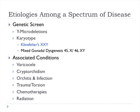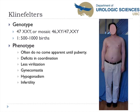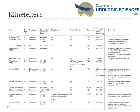Klinefelter's disease has an incidence of 1 in 500 to 1 in 1,000 in the population. The genotype is typically 47XXY, but mosaics of 46XY and 47XXY exist. These individuals often don't present until puberty or with infertility later on, hypogonadism, and sometimes gynecomastia. A meta-analysis found that on average about 50% of these individuals can have sperm found on microdissections.